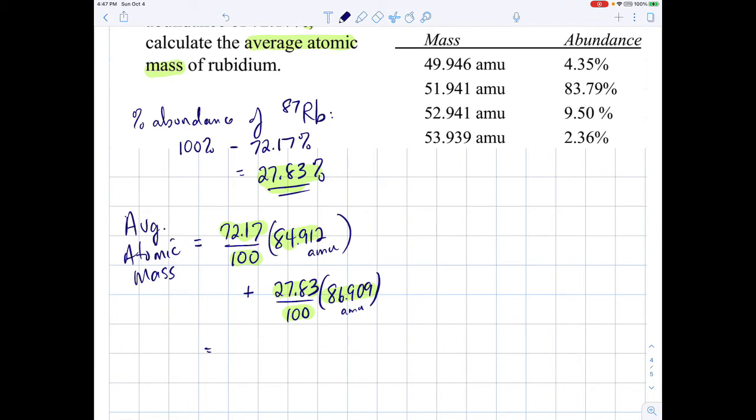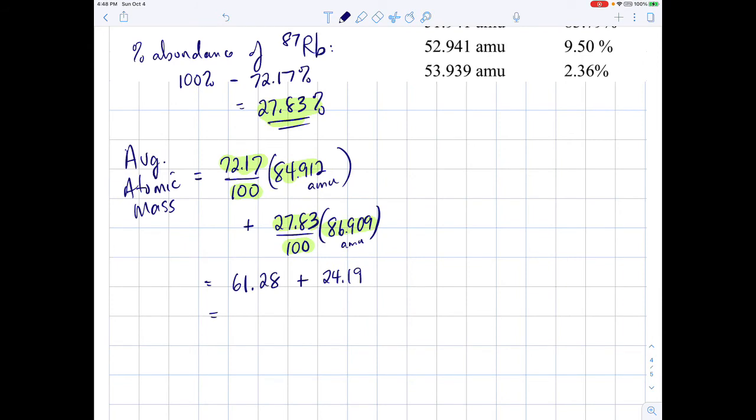So grab your calculator and see if you can get the average atomic mass of rubidium. So 72.17 divided by 100 times 84.912. The first guy will be, I'm going to keep four digits here, 61.28. And the second guy, 27.83 divided by 100 times 86.909. That guy gives me, again with four significant digits, 24.19 AMUs. And now when I add those, I'm going to keep two decimal places in the answer, 61.28 plus 24.19. That gives me 85.47 AMUs, the average atomic mass of rubidium.